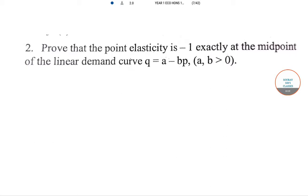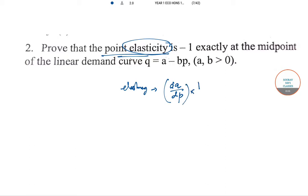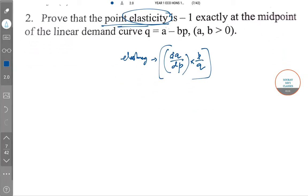The third question: prove that the point elasticity is −1 exactly at the midpoint of the linear demand curve Q = A − BP. For point elasticity, the formula is (dQ/dP) × (P/Q). There are also arc elasticity formulations. I have covered the full elasticity structure in another video on our channel named 'Elasticity Structure.'